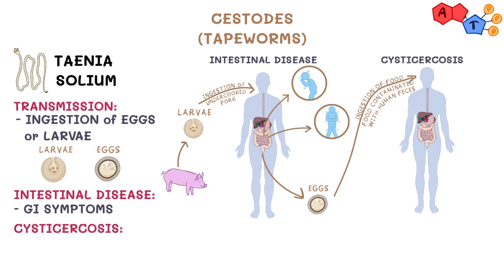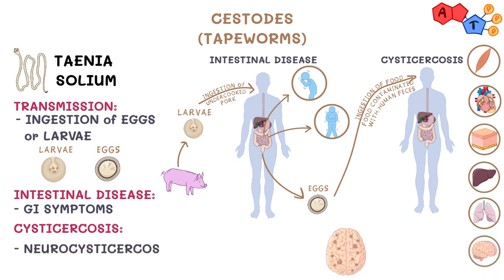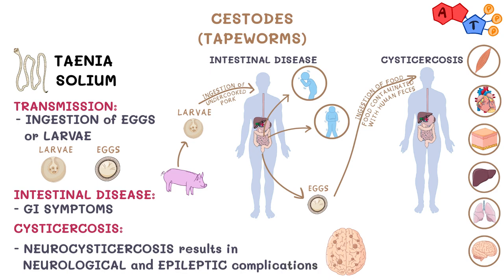Symptoms of cysticercosis may vary, and they depend on the location of the infected tissue and the number of larvae. It can affect skeletal muscle, heart, skin, liver, lung, or other tissues. It can also reach the brain to cause neurocysticercosis, leading to serious neurological and epileptic complications.